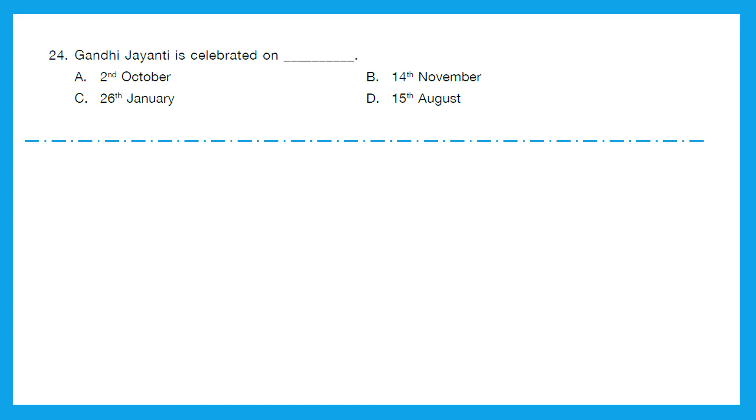Question 24: Gandhi Jayanti is celebrated on which day? Is it 2nd October, 14th November, 26th January or 15th August? We all know this because we have the national holiday on that day. It's 2nd October. Gandhi Jayanti is celebrated on 2nd October. Option A is the right answer.